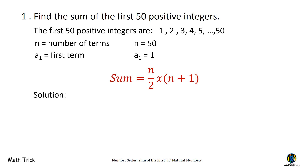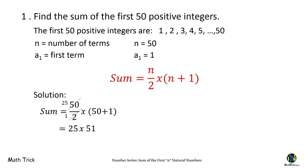Substituting into the formula: 50 over 2 times (50 plus 1). 50 divided by 2 is 25. 50 plus 1 is 51. 25 times 51 is 1,275. The sum of the first 50 positive integers is 1,275.